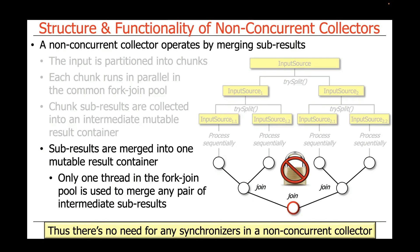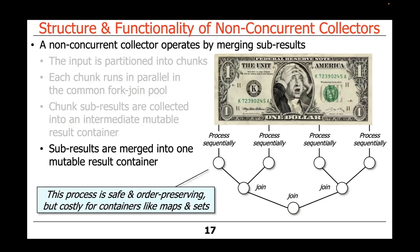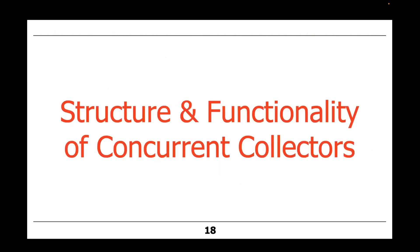However, there's a cost for this in some circumstances. Non-concurrent collectors will be thread safe and can preserve order if you use data types like lists. But for containers like maps and sets, it's costly because they have to merge these subresults together.